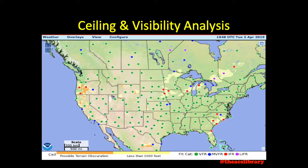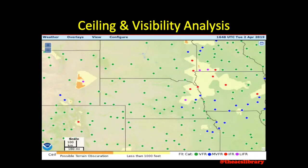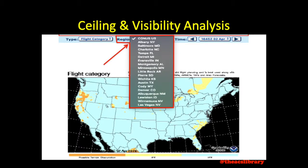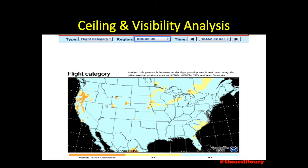The full continental U.S. view is decluttered by removing some reporting stations. As we zoom in on a section, we see that more stations appear. To access a regional plot, press on the bottom map and in the next window select from one of the 18 regions or a full continental U.S. plot under the region drop-down menu. The full continental U.S. view does not include station flight category information.